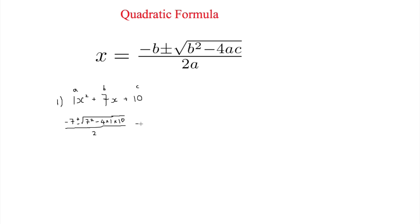This can be simplified—that's not the final answer. It simplifies to negative 7 plus or minus the square root of 49 minus 40, which is 9. As you can see, this is looking nice already. That's all over 2.